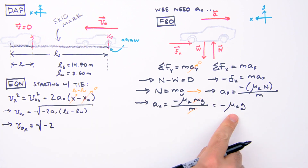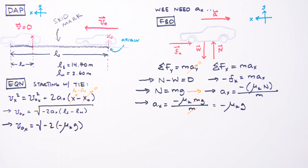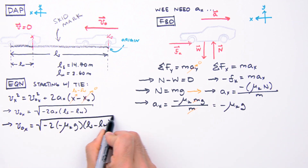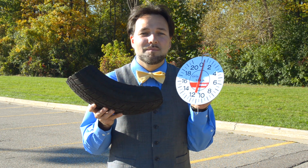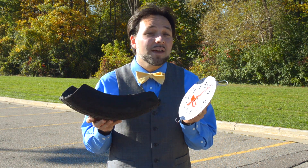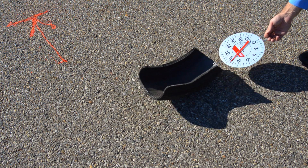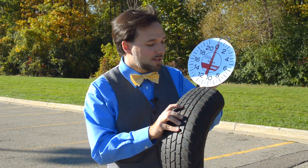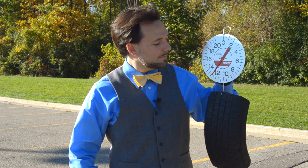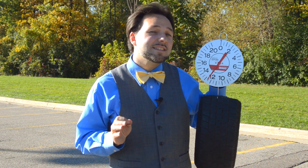Now we just need a value for mu sub k. We could look it up in a textbook, but that would be somewhat inaccurate and, more importantly, totally lame. To determine mu sub k — the coefficient of kinetic friction between tire and road — we'll use a piece of tire and a spring scale. Dragging the tire along the road yields a kinetic friction force of about 10.5 newtons. Suspending the tire by the spring scale yields its weight of about 12.5 newtons. Assuming no vertical acceleration, the weight of the tire equals the normal force of the road acting on the tire.